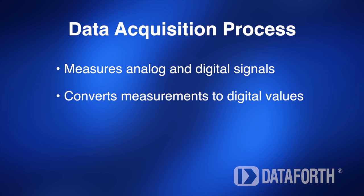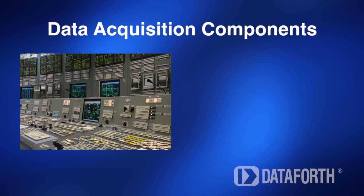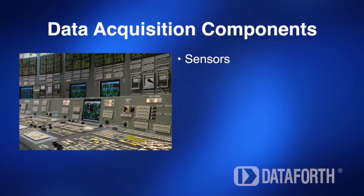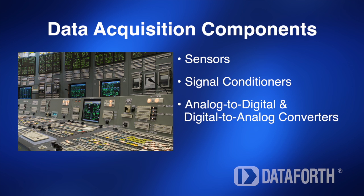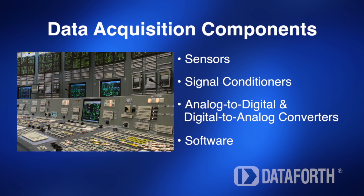Then digitizing the measurements for manipulation by a control system. The components of a data acquisition system include sensors to provide the analog input signals, signal conditioners to filter, amplify, isolate, and linearize input and output signals, analog-to-digital and digital-to-analog converters, and software, which allows data acquisition hardware to work with a host computer and control applications.